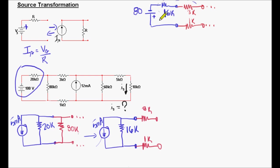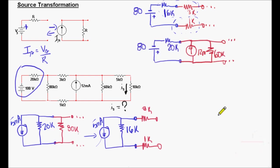Those resistors are in series, as well as the 1k ohm, because this is just a big mesh and all those components are in series. So let's add them. Now we have the combination of those three resistors, which is 20k. This is part of our blue side piece of circuit. I'll add two more components and we are going to work with them now.